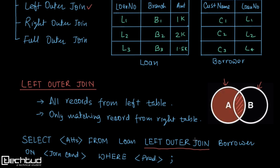It's the same as inner join syntax, but instead of writing INNER JOIN you write LEFT OUTER JOIN — apart from this everything is the same. The full syntax is: SELECT attributes FROM loan LEFT OUTER JOIN borrower ON loan.loan_number = borrower.loan_number. You can also apply an additional filter in the WHERE clause, for example WHERE loan.amount > 1500. Any additional filtering can be done in the WHERE clause as a predicate.